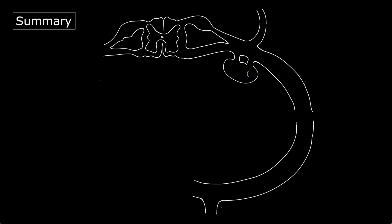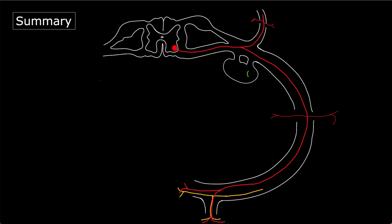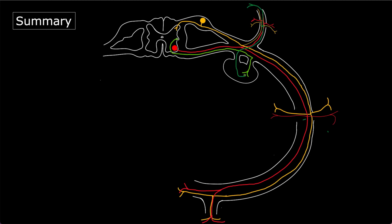Now we have talked about the motor component, the sensory component, and the sympathetic component. To summarize: the motor fiber runs within the spinal nerve in both the dorsal and ventral ramus giving respective branches; the sensory fibers carry sensations from across the body back to higher centers; and the sympathetics — preganglionic and postganglionic — follow the same pathway. That completes a typical spinal nerve — its organization of motor, sensory, and sympathetic fibers.